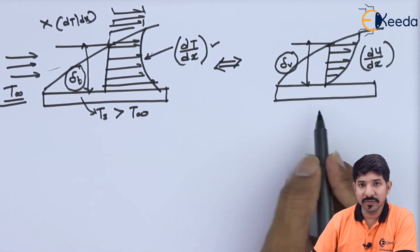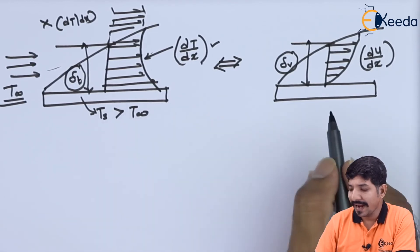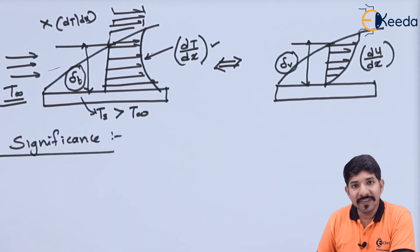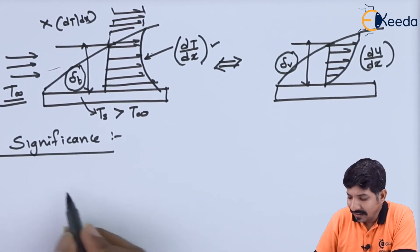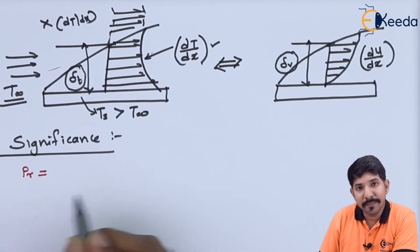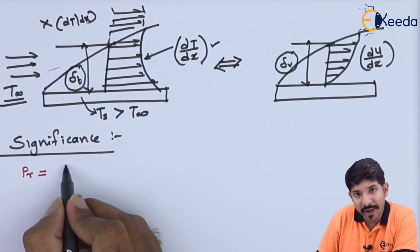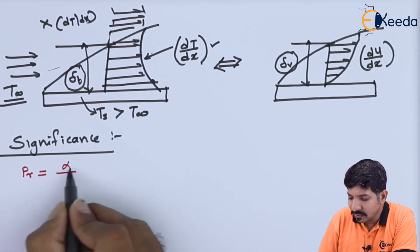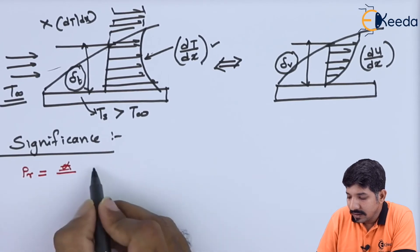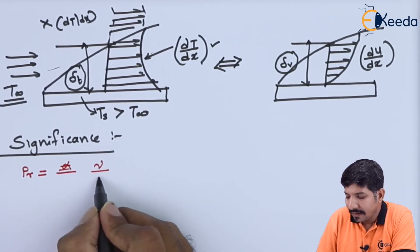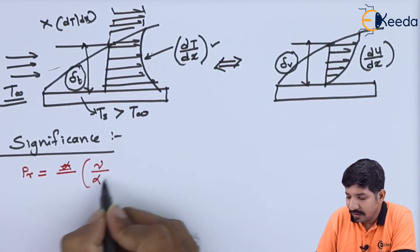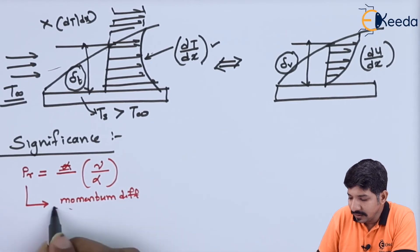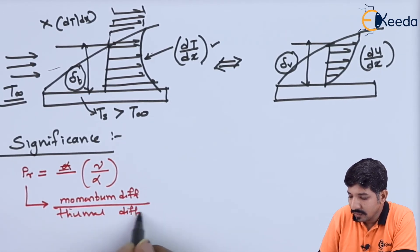What connects these two — the significance of the thermal boundary layer and the velocity boundary layer — can be explained with the help of the Prandtl number. The Prandtl number is the ratio of momentum diffusivity to thermal diffusivity. Momentum diffusivity is given by kinematic viscosity (nu or mu) and thermal diffusivity is given by alpha. So, the Prandtl number is the ratio of momentum diffusivity to thermal diffusivity.